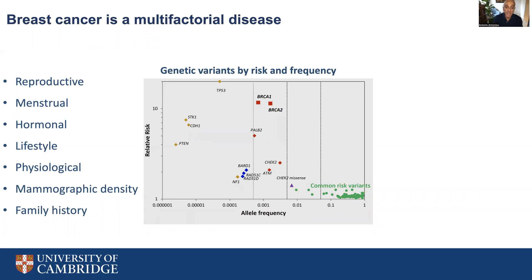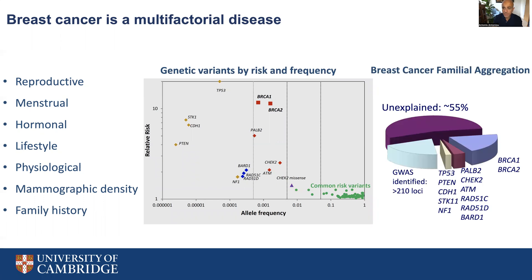These are summarized in this graph here. The x-axis shows the frequency with which these genetic variants occur in the population, and the y-axis shows the relative risk of breast cancer. We have rare genetic variants that are associated with moderate or high risks of developing breast cancer, and then multiple common genetic variants that individually are associated with low risks of developing the disease.